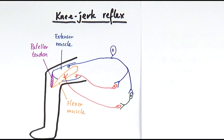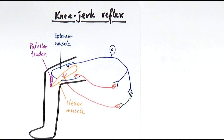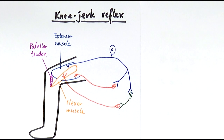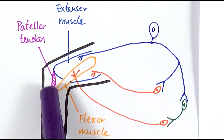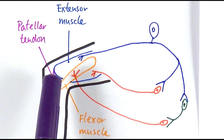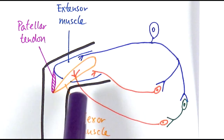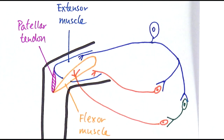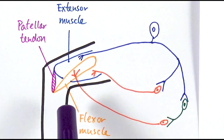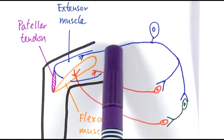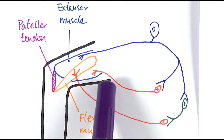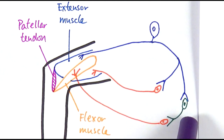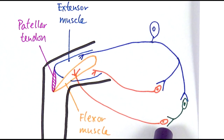The first example is the knee jerk reflex. It's important to know the different structures of the knee first. Here I have color-coded them: we've got the patellar tendon, which is found just underneath the kneecap; then the extensor muscle, which is near the front of your thigh; and the flexor muscle, which is like the hamstring at the back of the thigh. The sensory neuron can branch off — one branch connects to a motor neuron directly linked back to the extensor muscle, and the other connects to a relay neuron in the spinal cord, which connects to a motor neuron linked to the flexor muscle.